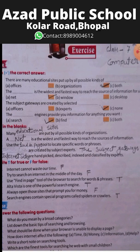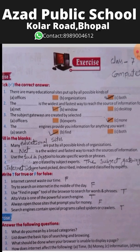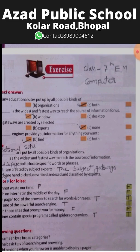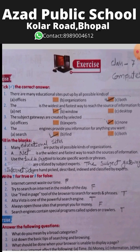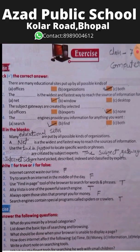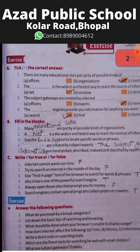First: there are many educational sites put up by all possible kinds of organizations. The blank is the widest and fastest way to reach the source of information for us — the answer is 'net.' The subject gateways are created by selected experts. The blank engine provides you information for anything you want — 'search engine.'